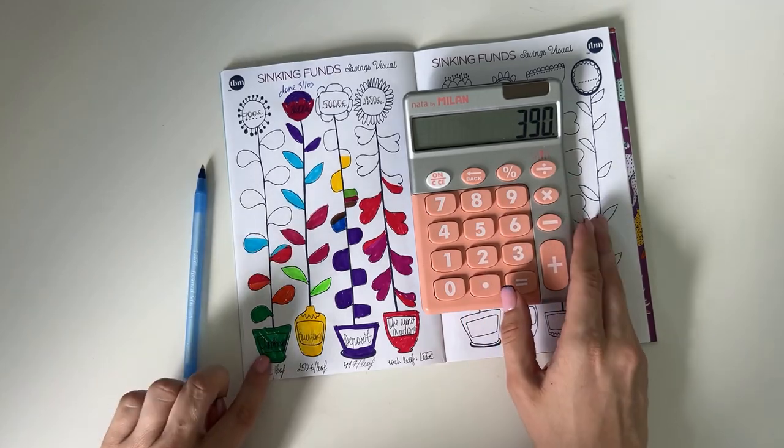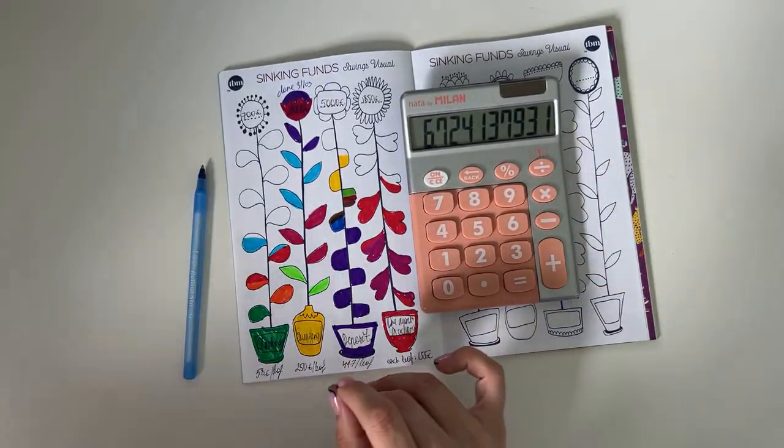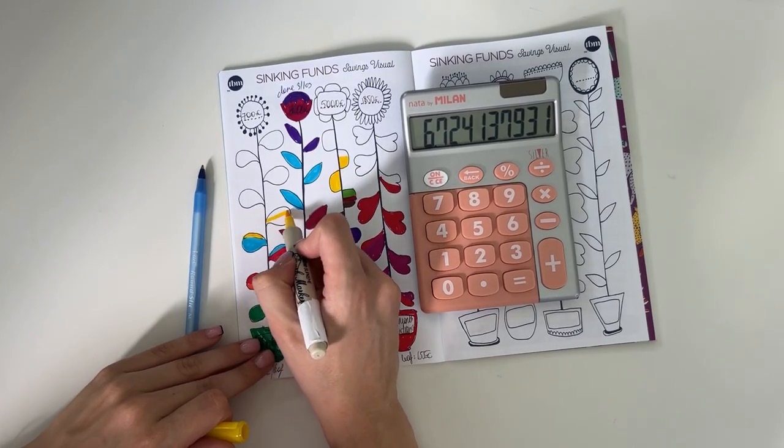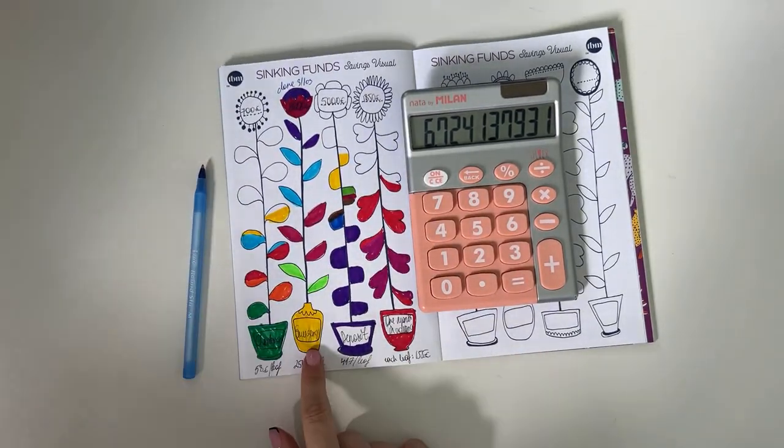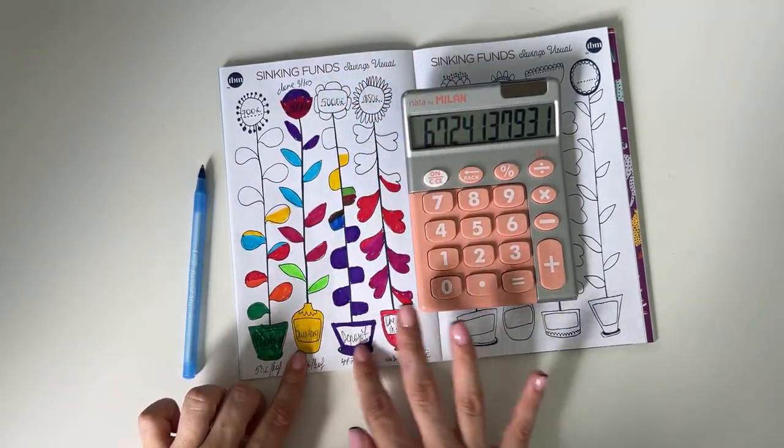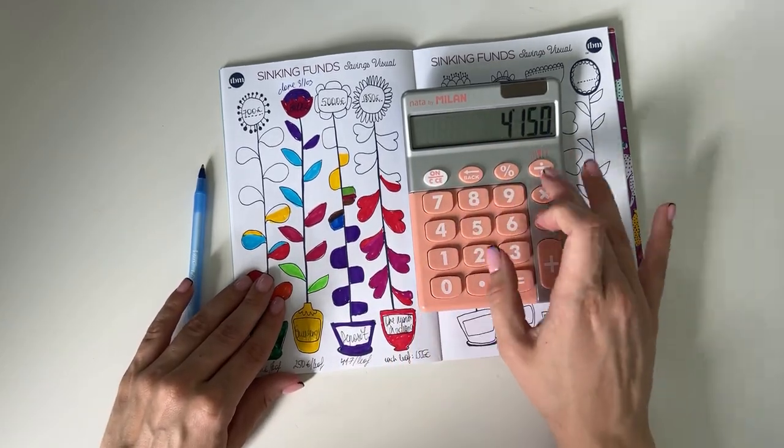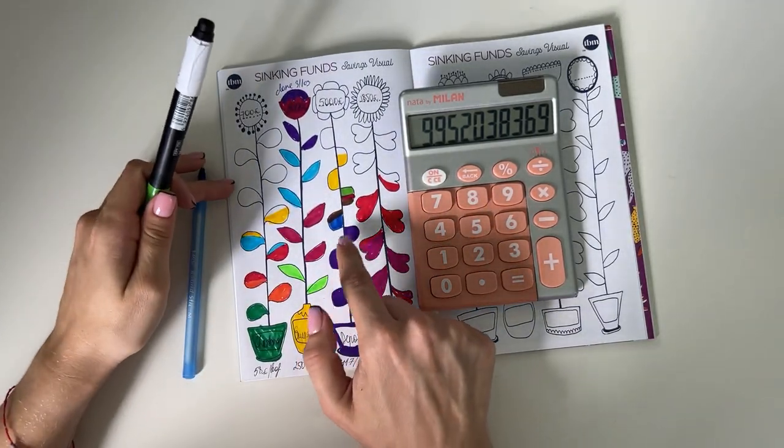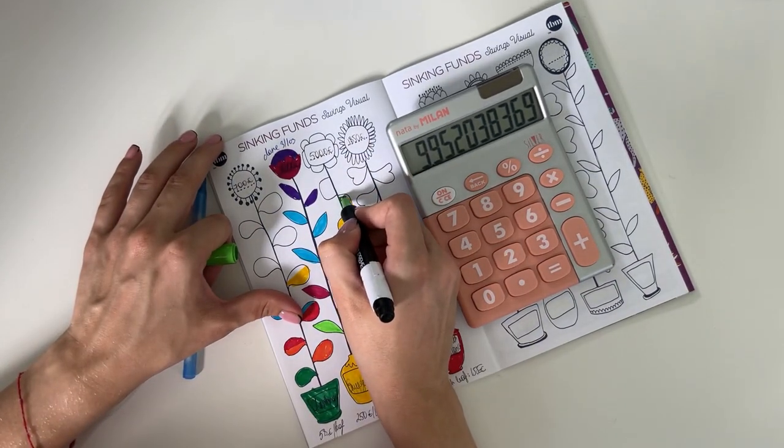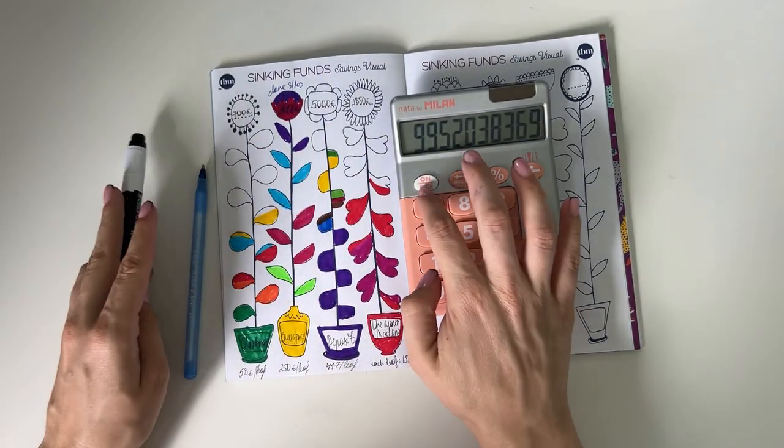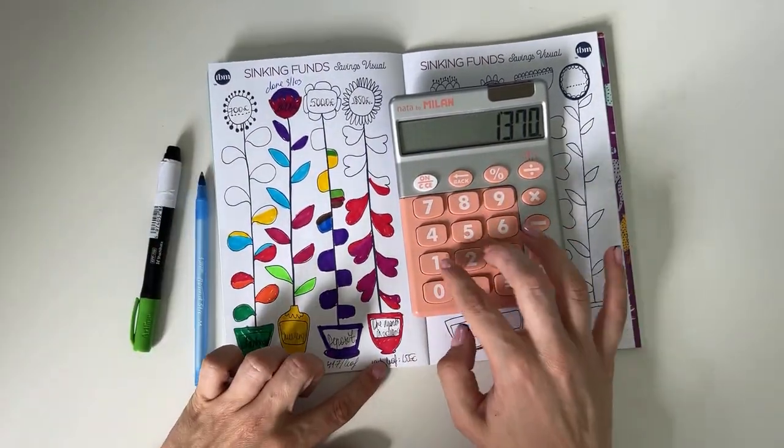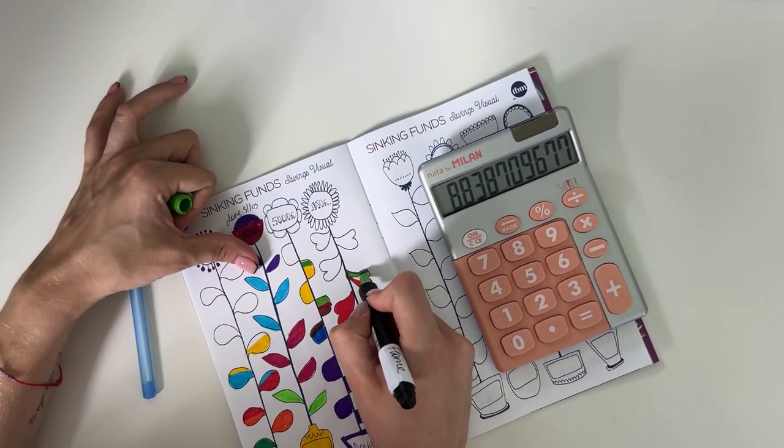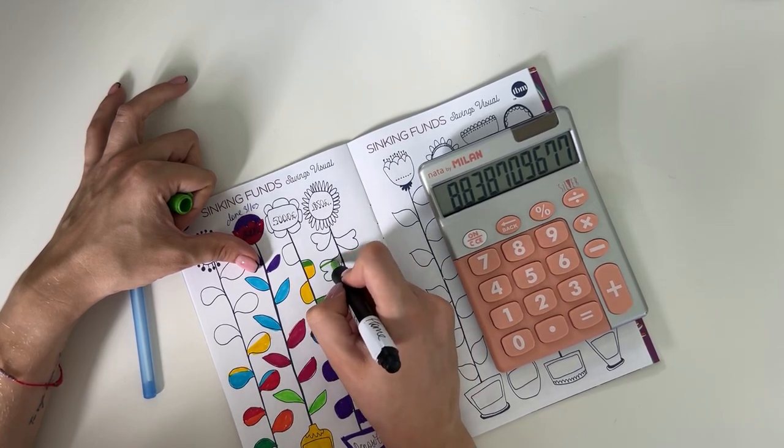Our goal is to have one month in advance of 1,850. We had 1,160 at the beginning of the month, and now we have 1,370, which means we added 210 euros. Now let's do a little coloring. Christmas, we have 390 divided by 58, which is one leaf. We can color in six full leaves and a little bit over. Deposit is 4,150 divided by 417, almost 10 full leaves. And one month ahead, 1,370 divided by 155, is almost nine.